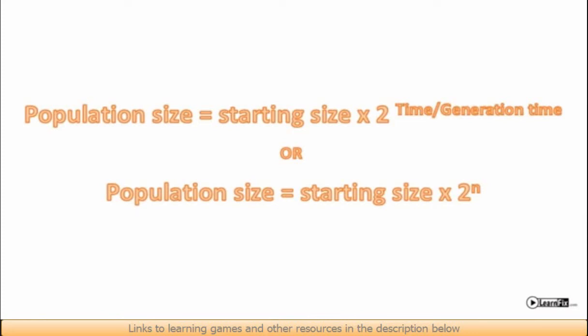If we wait that length of time, then the population size will have doubled. So if we divide the time the bacteria have been growing for by the time it takes them to divide once, we'll know how many times the population size has doubled. So the size of a population is equal to the starting size multiplied by 2 to the power n, where n is the number of times that the bacterial population has doubled, or the time divided by the generation time.